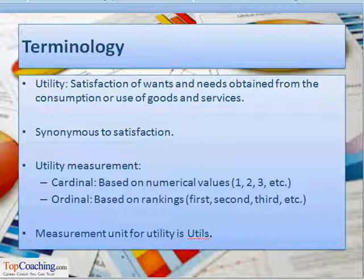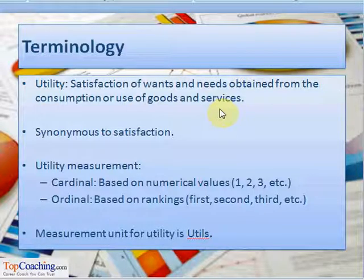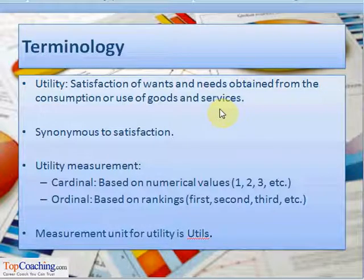The first such term is utility. Utility is the satisfaction of wants and needs obtained from the consumption or use of goods and services. The terms utility and satisfaction are used interchangeably in economics, so utility can be regarded as a quantification of the satisfaction of wants and needs which are achieved through the consumption of goods and services.